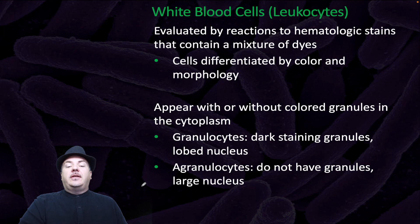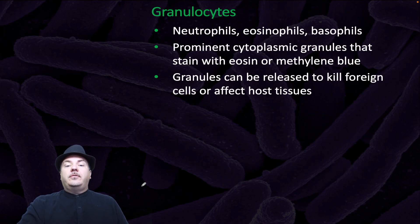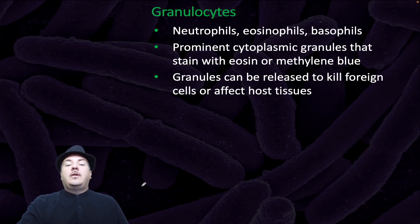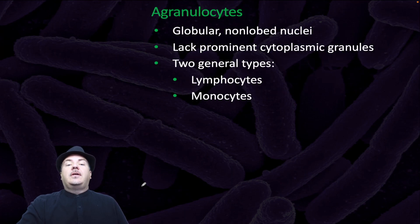Granulocytes have dark-staining granules and a lobed nucleus. Agranulocytes do not have granules and have a large nucleus. Granulocytes include neutrophils, eosinophils, and basophils, with prominent cytoplasmic granules that stain with eosin or methylene blue. Granules can be released to kill foreign cells or affect host tissues. Agranulocytes have globular, non-lobed nuclei and lack prominent cytoplasmic granules. The two types of agranulocytes are lymphocytes and monocytes.